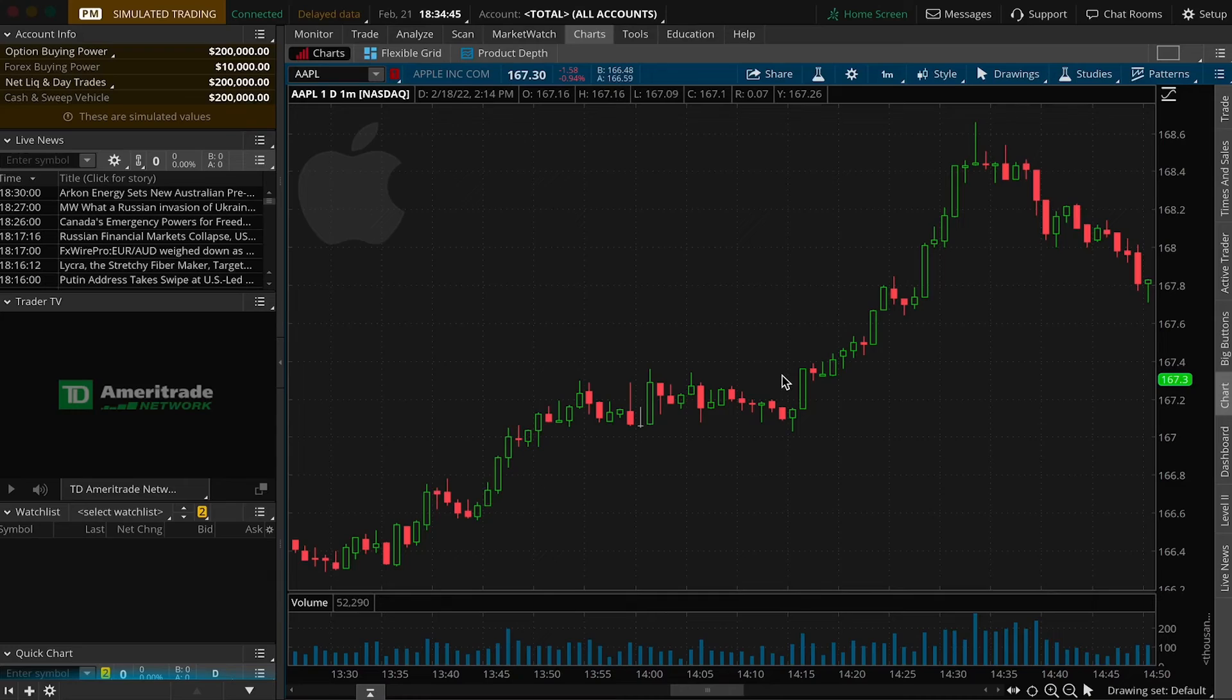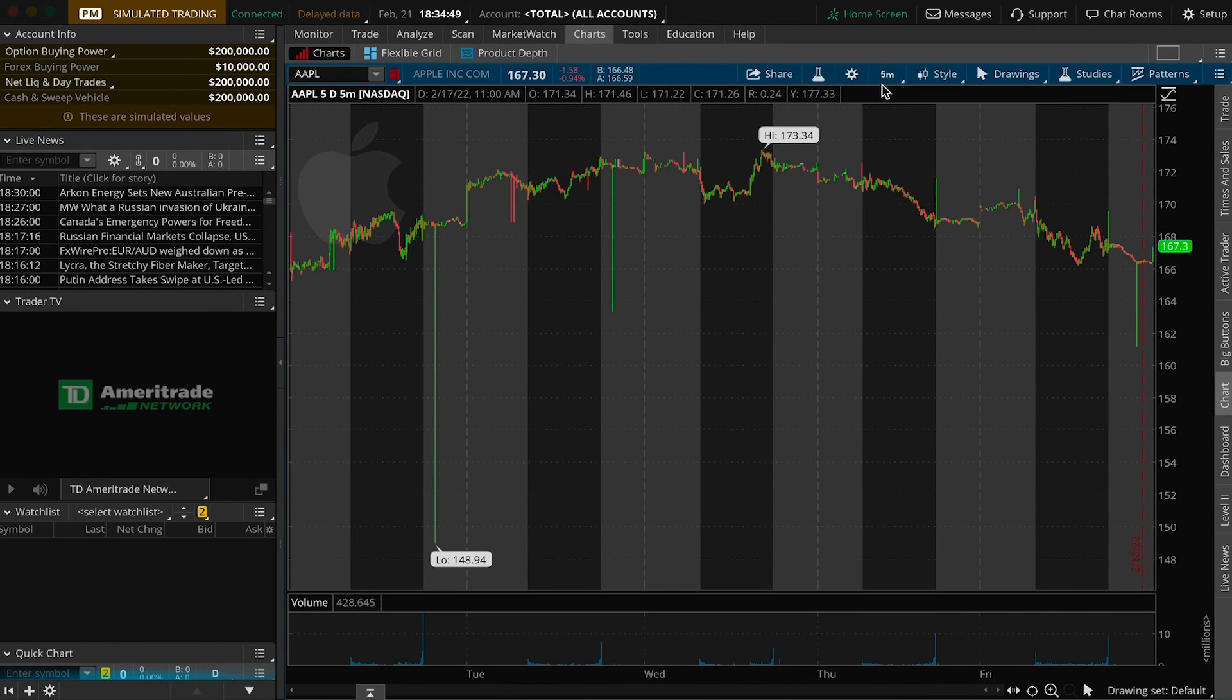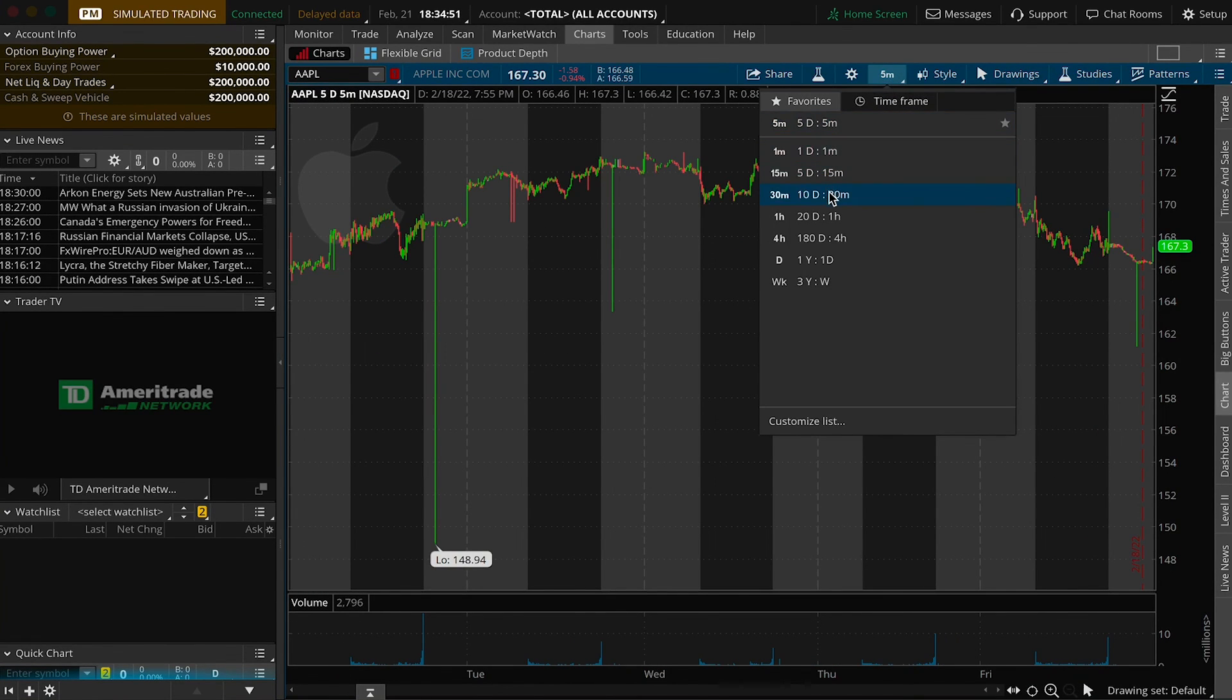Here's a quick example on TD's Think or Swim where you can adjust between different time periods for your charts. This is a 1-minute chart, 5-minute chart, and 30-minute chart.